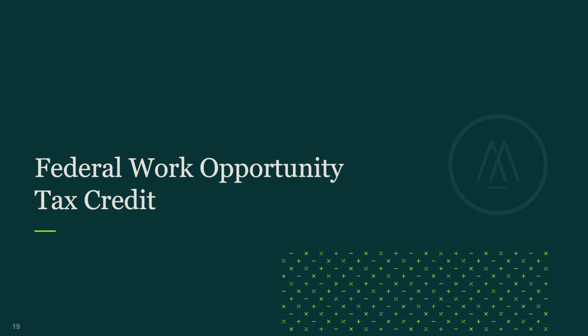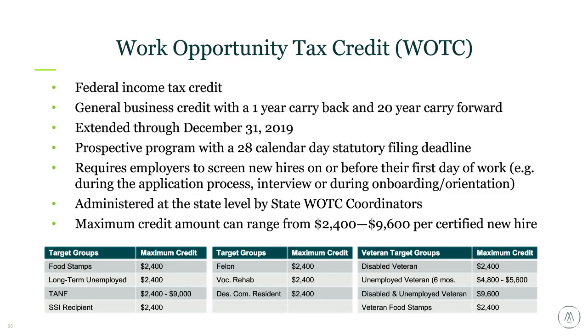Now we're going to talk about the Federal Work Opportunity Tax Credit, and then jump into a discussion on discretionary incentives. The WOTC is a program that has been around since 1996. It's a federal income tax credit — there's not really a specific eligibility requirement from the company standpoint; as long as you're hiring folks in the U.S., you're typically eligible. It's a general business credit with a one-year carry back and a 20-year carry forward, so it has a pretty long useful lifetime and can be quite valuable.